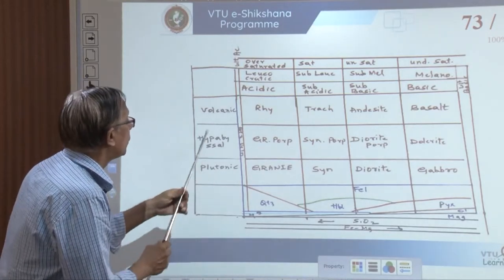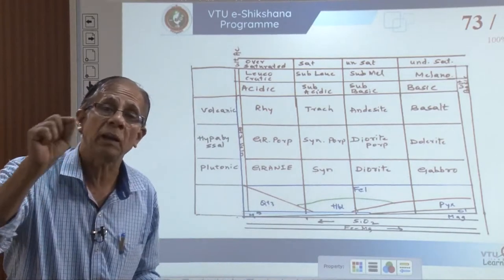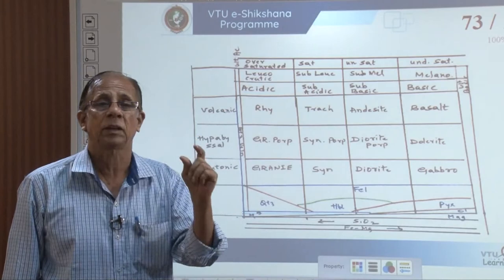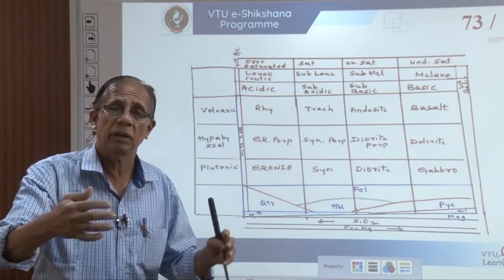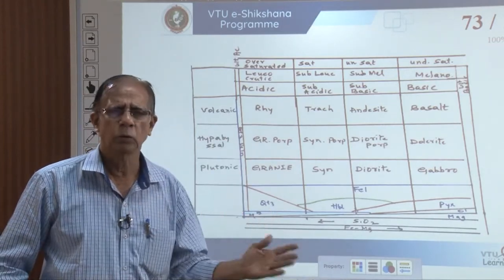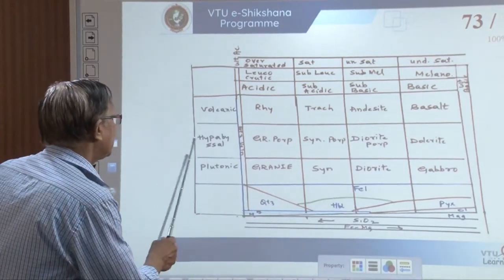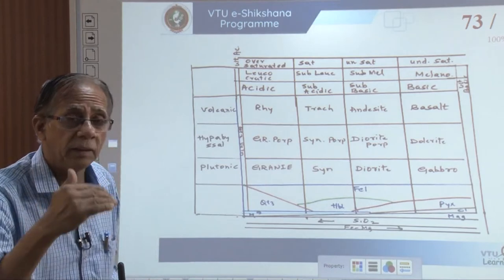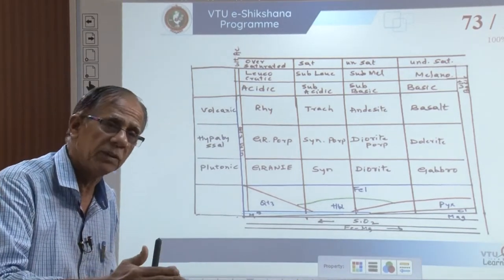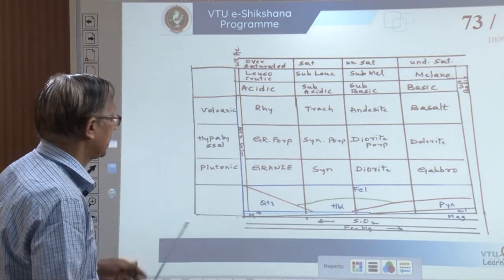Second, where these rocks are found: when we say plutonic, we mean it is equigranular, thoroughly crystalline, with an interlocking arrangement of all minerals, and based on this it has higher crushing strength, shear strength, and is free from pore cavities. When we say hypobasal, it has an inequigranular arrangement. When we say volcanic, there are gas cavities, amygdaloidal structure, ropy surface, etc. This classification has an attachment of plutonic, hypobasal, and volcanic.